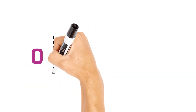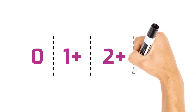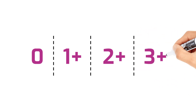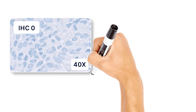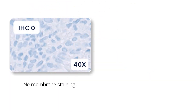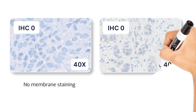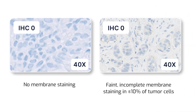When scoring HER2 by IHC, the scores are usually 0, 1 plus, 2 plus, or 3 plus. The ASCO CAP guideline defines HER2 IHC 0 as no staining is observed or membrane staining that is incomplete and is faint, barely perceptible, and in less than or equal to 10% of tumor cells.